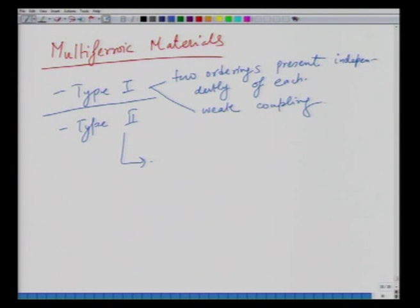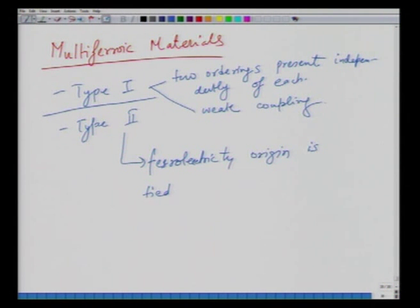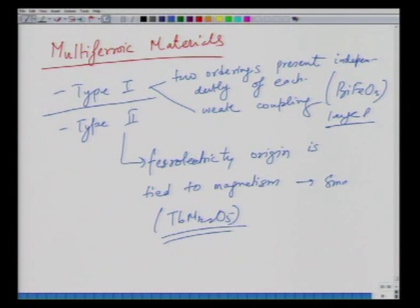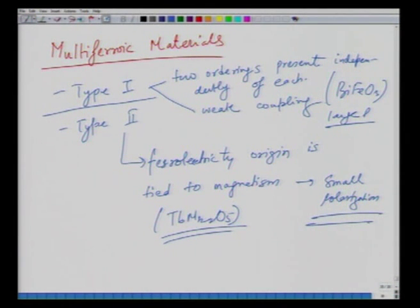In Type 2 multiferroics, the origin of ferroelectricity is tied to magnetism. Examples: BiFeO₃ is a Type 1 material, while TbMn₂O₅ is a Type 2 material. Type 1 multiferroics typically have large polarization, while Type 2 multiferroics typically have small polarization — this is the key difference between the two classes.